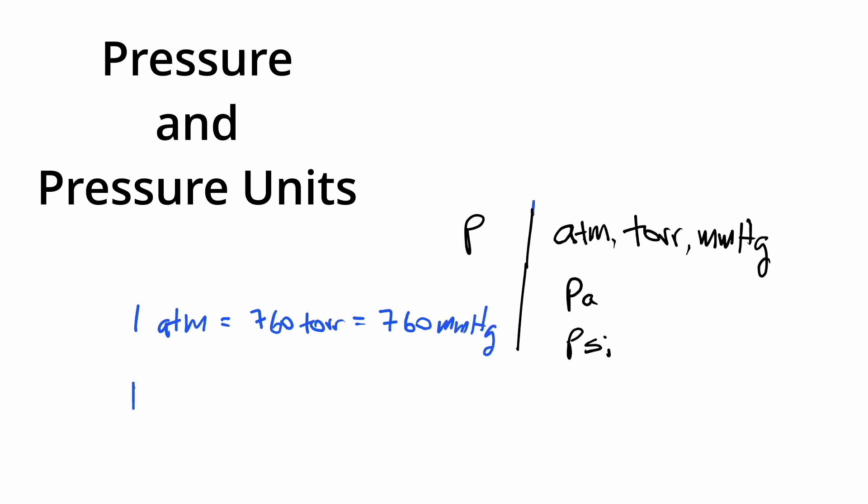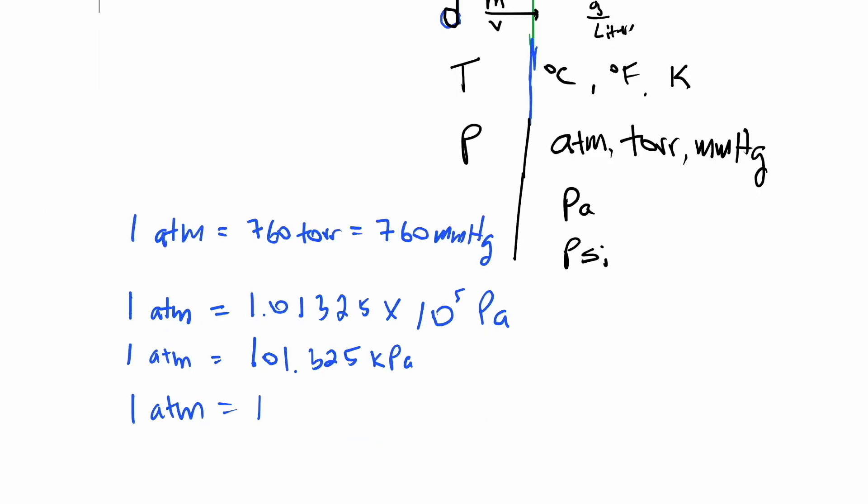You might also need to know, or at least have written down in a formula sheet, that one atmosphere is equivalent to 1.01325 times 10 to the 5th pascals. That means that one atmosphere is also equivalent to 101.325 kilopascals, or one atmosphere is equivalent to 14.71 psi.